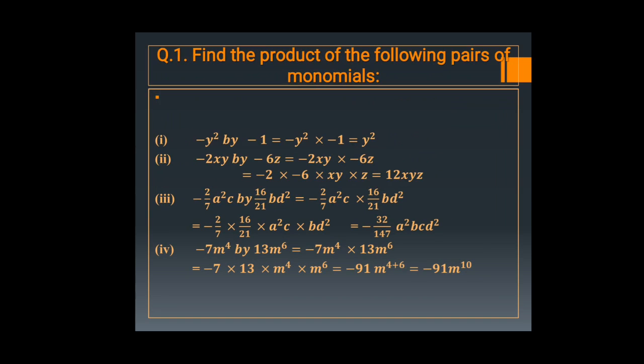The second part: minus 2xy multiplied by minus 6z. Here also minus into minus is plus, and 2 into 6 is 12. Then xy into z equals xyz. So the answer is 12xyz.